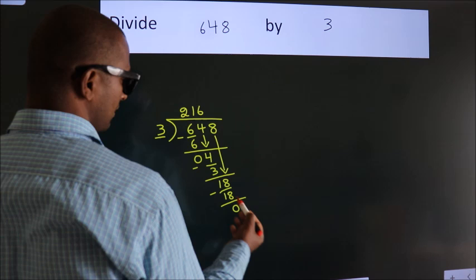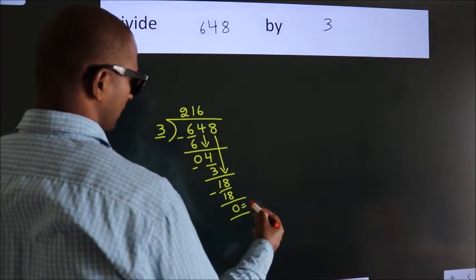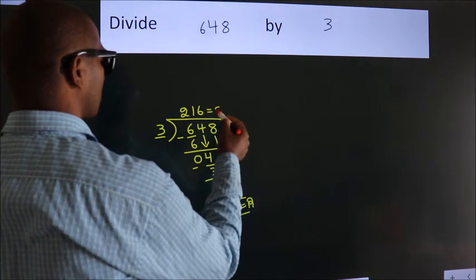After this, no more numbers to bring down, so we stop here. This is our remainder. This is our quotient.